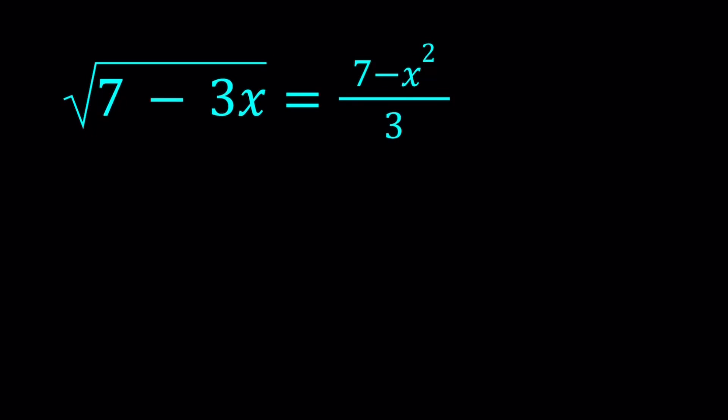Hello everyone, in this video we're going to be solving a radical equation. We have the square root of 7 minus 3x equals 7 minus x squared all over 3 and we're going to be finding the x values.